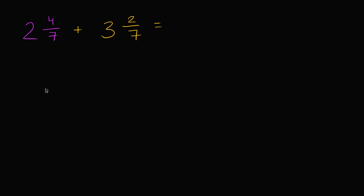Well, there's a couple of ways that you could tackle it. One way, you could say, let me just add the non-fraction parts. You could say that two plus three is equal to five. And then you could say that four-sevenths plus two-sevenths is equal to six-sevenths.